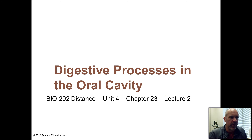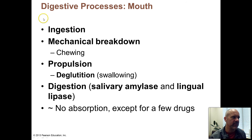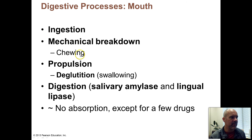Lecture number two for the digestive system. We're going to talk about what's going on digestively in and around your oral cavity. In your mouth, this is where you actually start your digestive processes. Ingestion of food takes place in the mouth. Mechanical breakdown is one of the processes of digestion, and chewing — taking in chunks of food and breaking them down into smaller pieces — is going to help you with digestion.